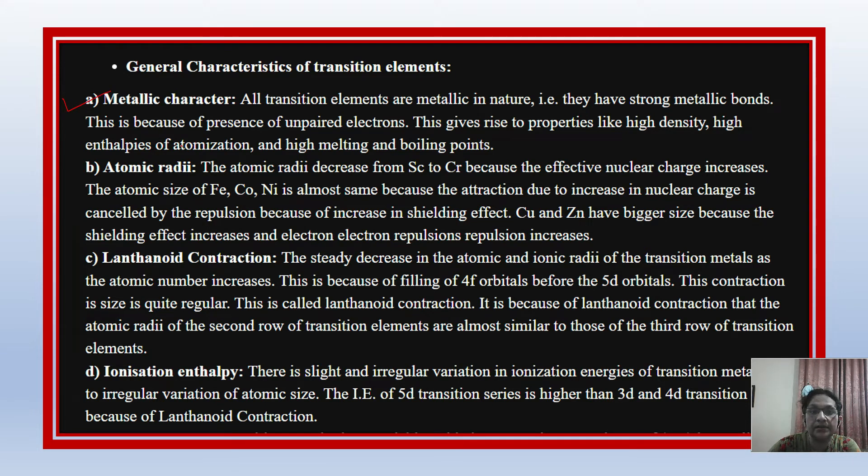The first characteristic is metallic characteristics. S and P block contain non-metals, but D block elements have metallic properties. They have strong metallic bonds due to the presence of unpaired electrons. Metals lose electrons, right? So these transition elements also lose electrons. The unpaired electrons lose quickly, which gives rise to properties like high density, high enthalpy of atomization, and high melting and boiling points. These are metallic characteristics.